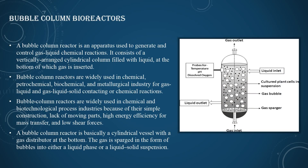In the bubble column bioreactor figure, there are probes for temperature, pH, and dissolved oxygen, a liquid outlet, gas sparger, gas inlet, gas bubbles, culture with plant cells in suspension, liquid inlet, and gas outlet. Essentially, it is a cylindrical vessel with a gas distribution system at the bottom; the gas sparger introduces bubbles into either a liquid phase or a solid phase.